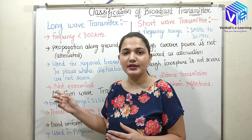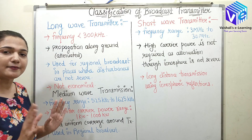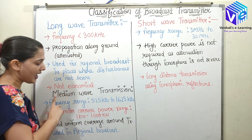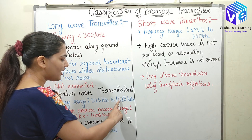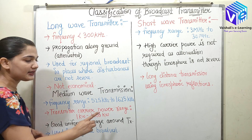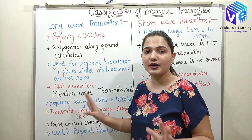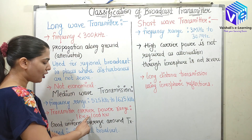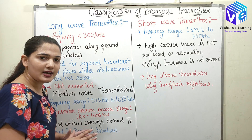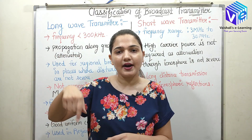Now coming to the medium wave transmitter. The wavelength is medium, which means the carrier frequency is medium — in the range of 525 kilohertz to 1625 kilohertz. The power range is from 1 kilowatt to 1000 kilowatt. It is used for regional broadcast and gives uniform coverage around the transmitter. There is no requirement of repeaters in the nearby areas, though the high power requirement is its main drawback.